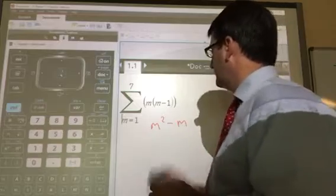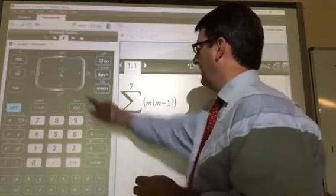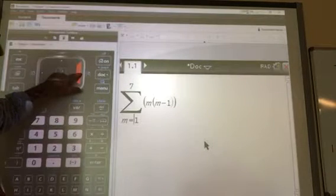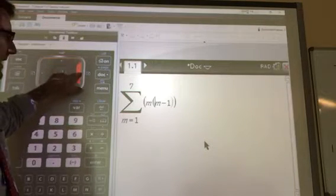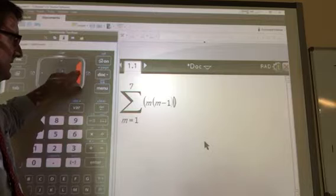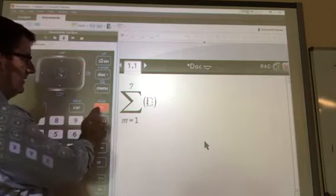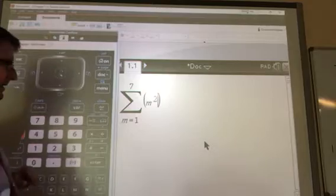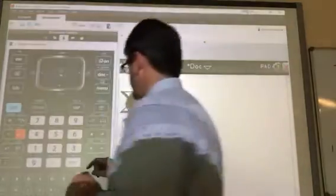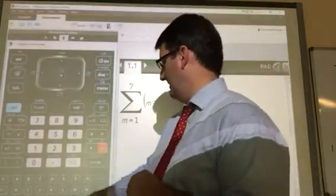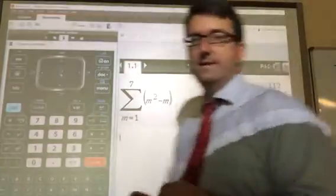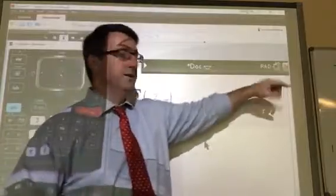So let's do that. Let's go ahead and go up here and erase all of this. We'll just enter m squared minus m. And then hit enter. And it tells us that the answer is 112.